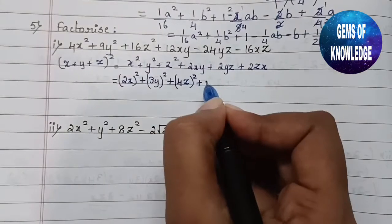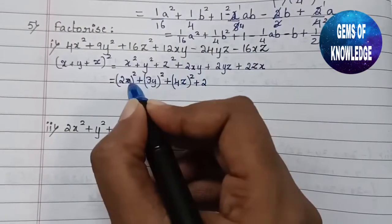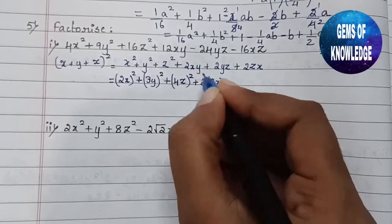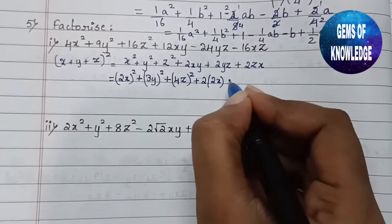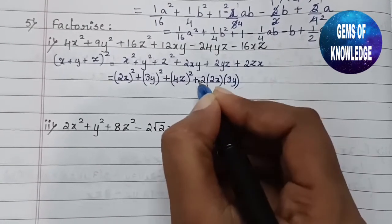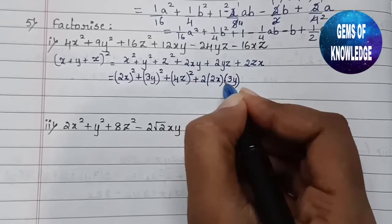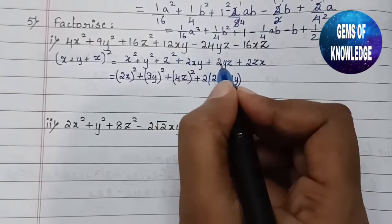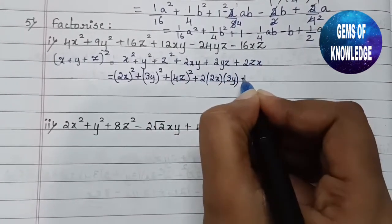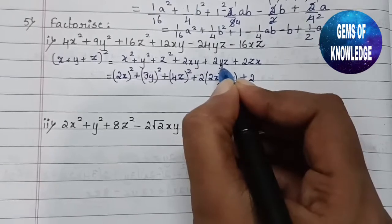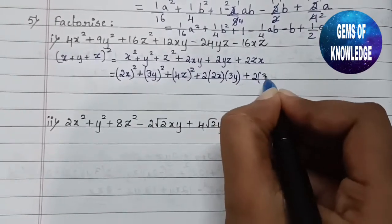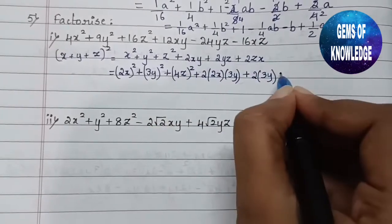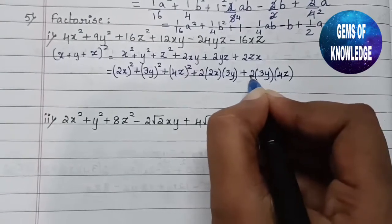Now looking at the cross term: the formula gives 2xy. Our x is 2x and our y is 3y, so 2 × 2x × 3y = 12xy, which matches the +12xy in the question. Moving to the next cross term, the formula gives 2yz. Our y is 3y and z is 4z, so 2 × 3 × 4 = 24, giving 24yz — but in the question this term is minus.